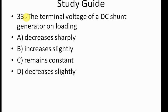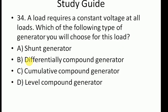Question 33: The terminal voltage of a DC shunt generator on loading: A) decreases sharply, B) increases slightly, C) remains constant, D) decreases slightly. Under loading conditions compared to unloading, there is I-squared R loss, so with major loading effect the voltage slightly decreases. Option D, decreases slightly, is the correct answer.